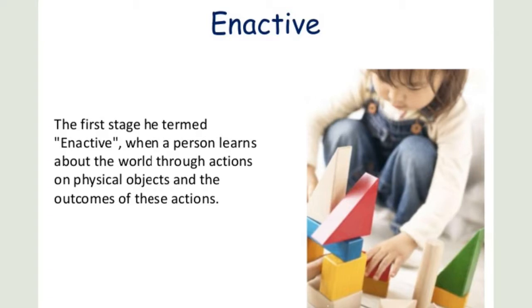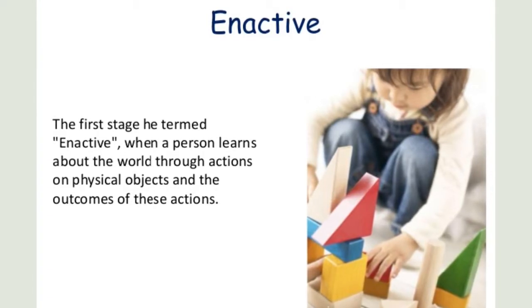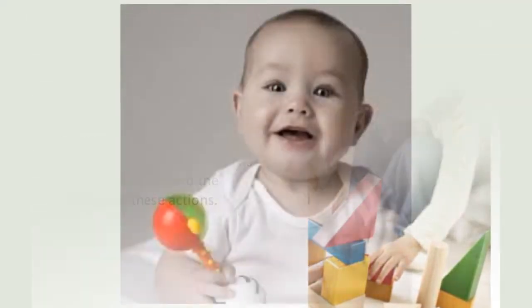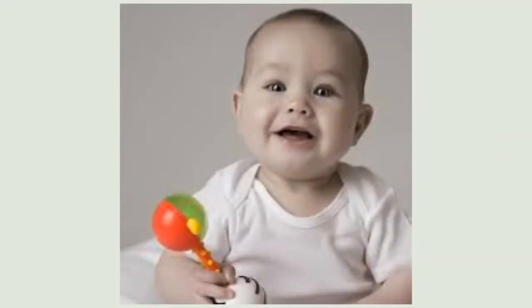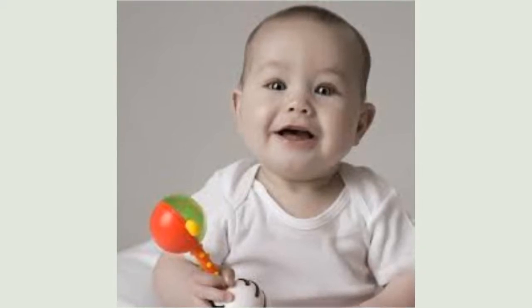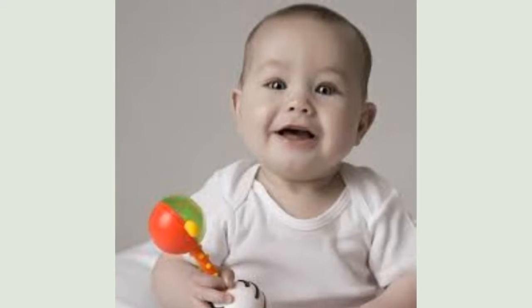Enactive is a mode of representation that appears first. It involves encoding action-based information and storing it in our memory. For instance, a baby might remember the action of shaking a rattle. The child represents past actions through motor responses — after dropping the rattle, the baby continued shaking his hand to produce sound.